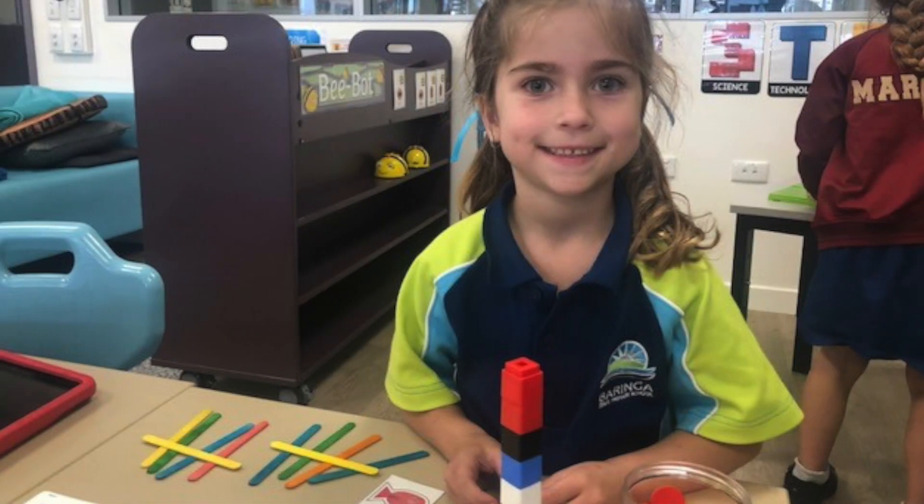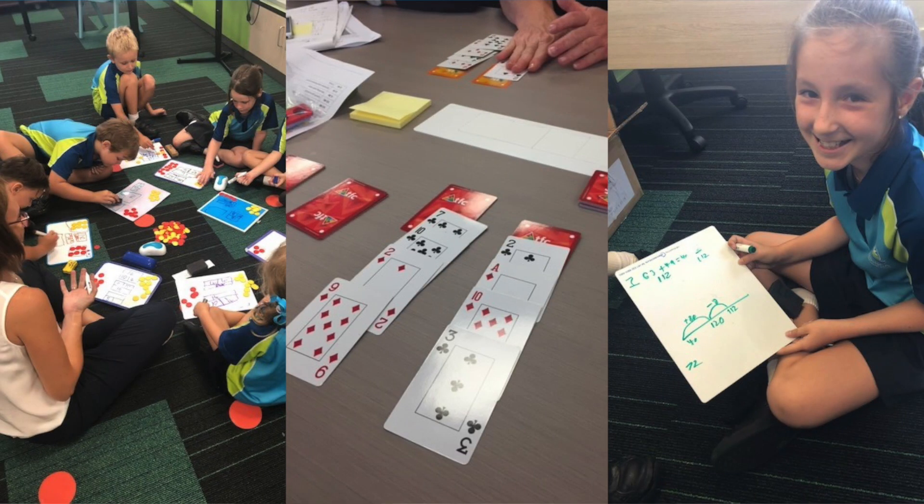Students then complete a series of academic games and number talks. Within the five week cycle, teachers are continually checking in on students' understanding and revisiting the I do, we do, you do model with specific groups of students.